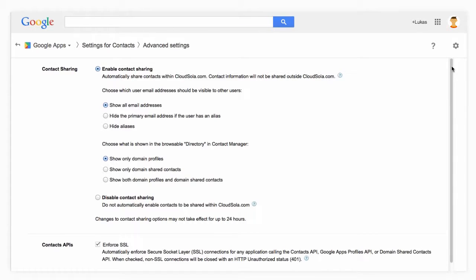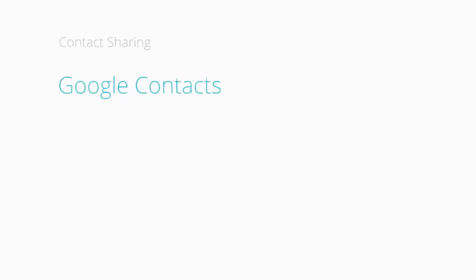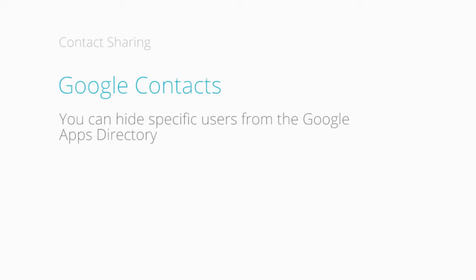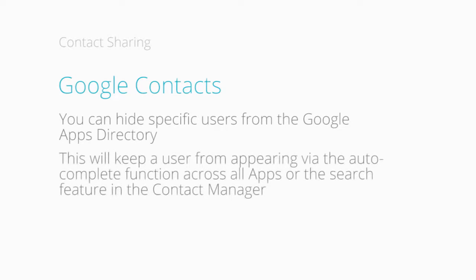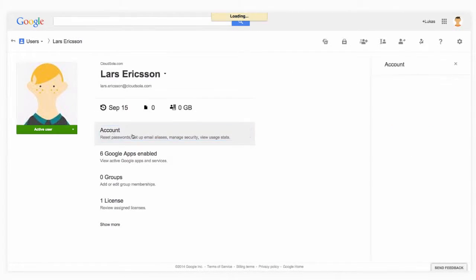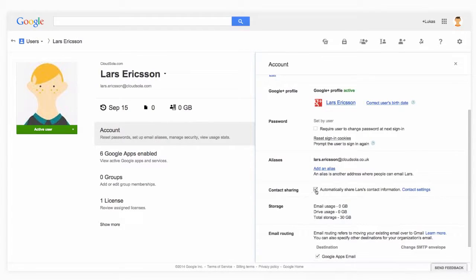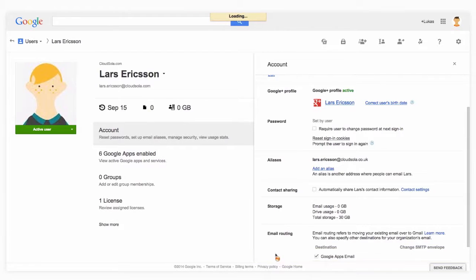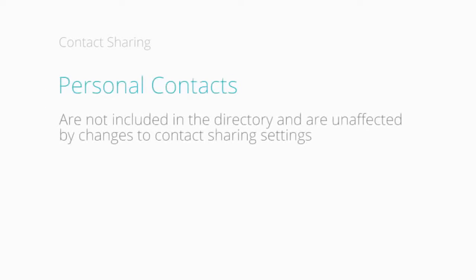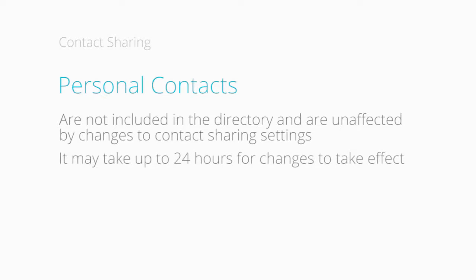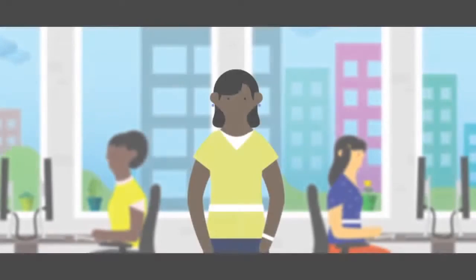You also have the option to hide a particular user from the Google Apps directory. If you want to prevent a user's contact sharing information from appearing in the autocomplete function in all of Google Apps or the search function in the Contact Manager, simply find the user in the list, go through their user information, and uncheck contact sharing just for that individual. Suspended and deleted users do not appear in the directory by default. Users' personal contacts are not included in the directory either, and are not affected by changes made to the contact sharing settings. It may take up to 24 hours for any change you make in the contact sharing settings to appear in the Google Apps directory.